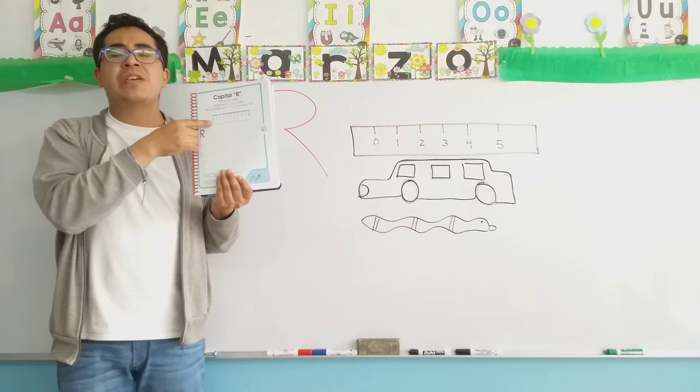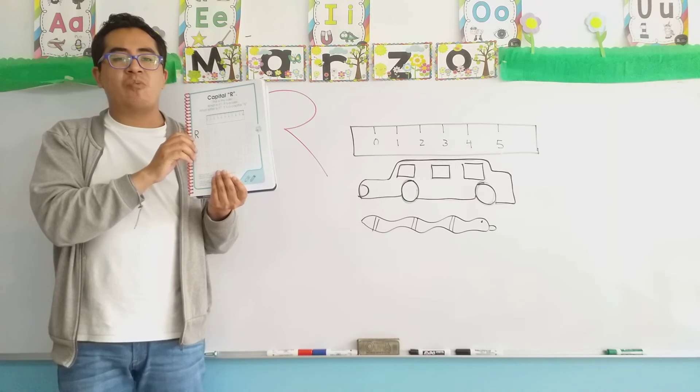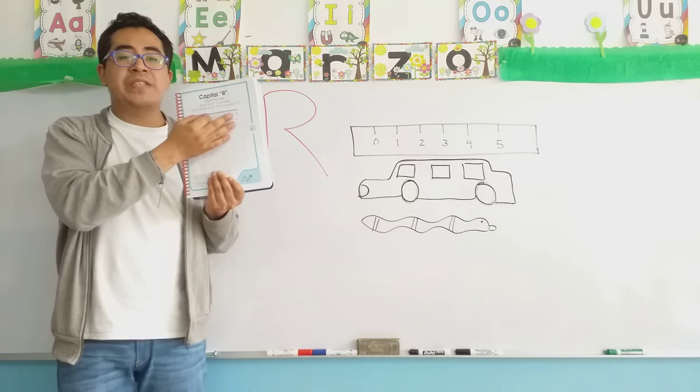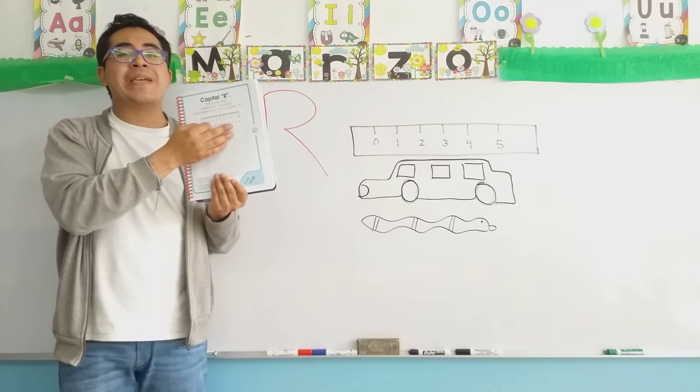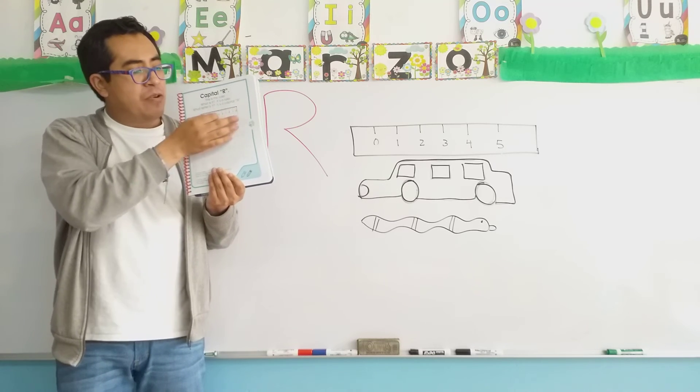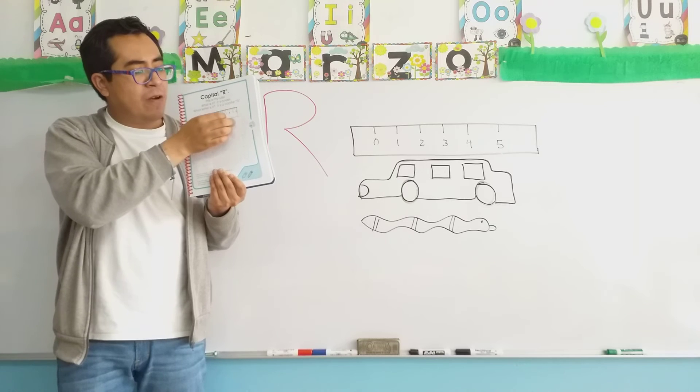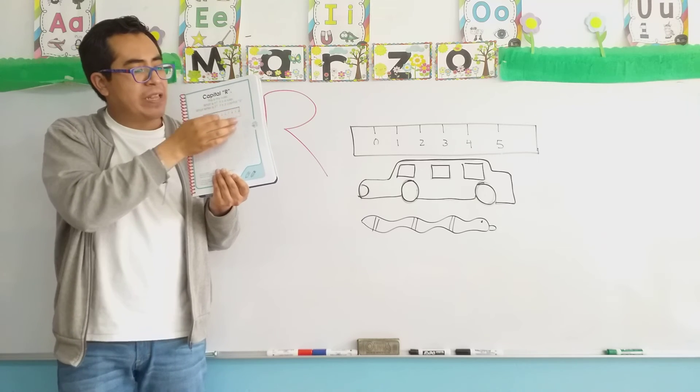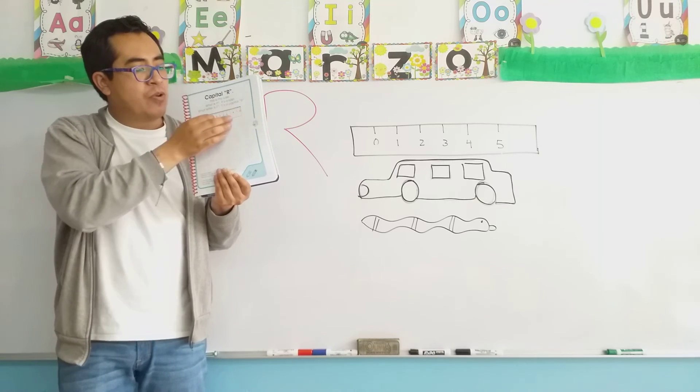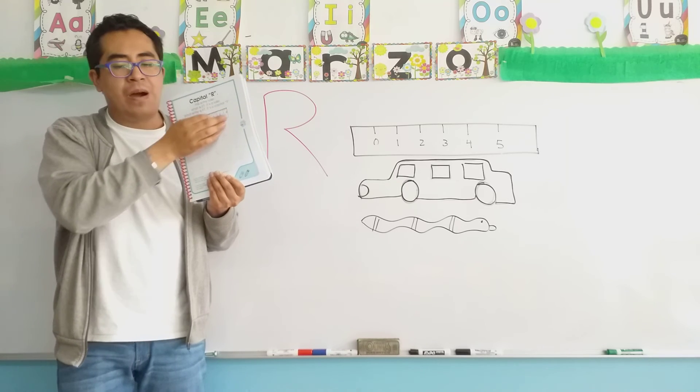After finishing all examples of the capital letter, we continue with the painting of the object. For the object, you can use any color that you want. Now, when you are painting the object, don't forget to repeat its name. Ruler. Ruler is an object of measure. Un objeto de medición. Ruler. Capital R.